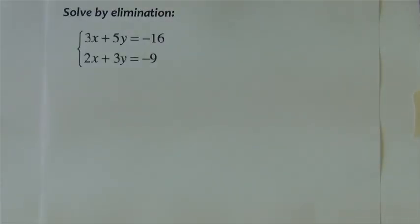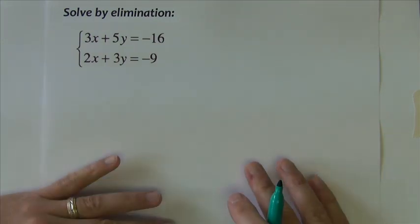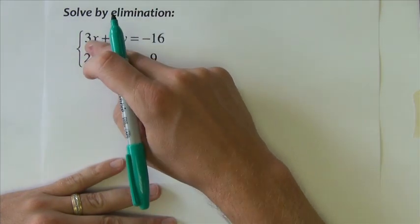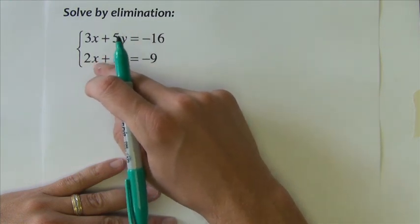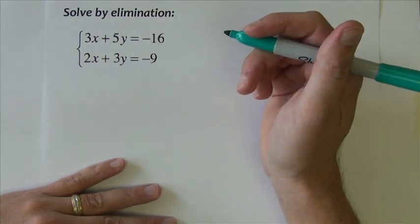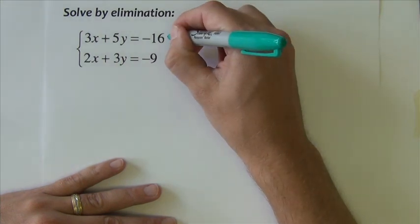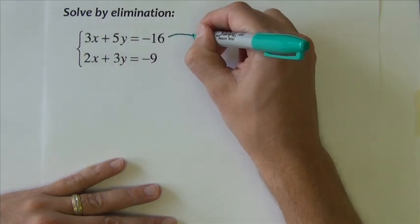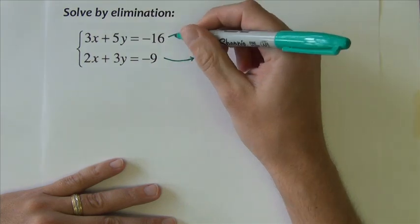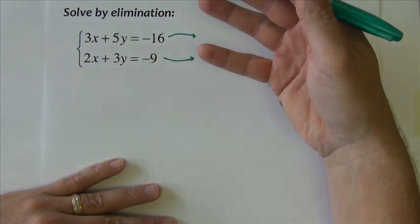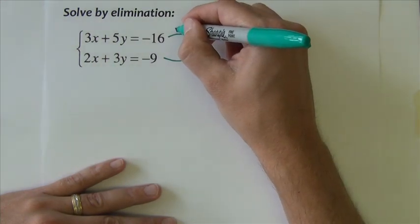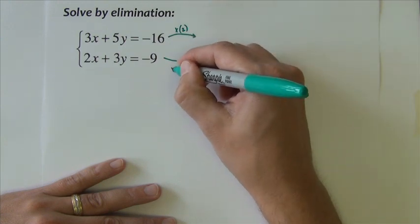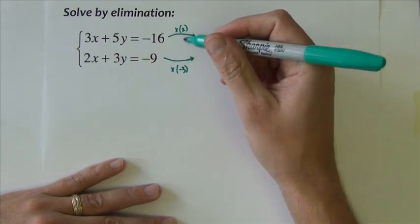Another example with the elimination method. Sometimes things don't add so nice and neat. If you notice on this one, if I just add down on both, the x's add to 5, the y's add to 8. I need an x or a y to cancel, and it doesn't happen in this particular problem. So what I'm going to do is modify the equations a little bit. I'm going to take this one times 2, this one times negative 3.